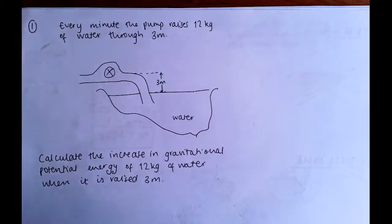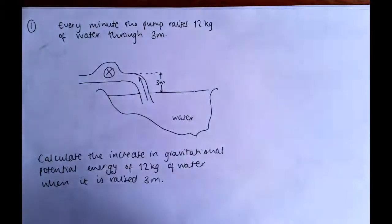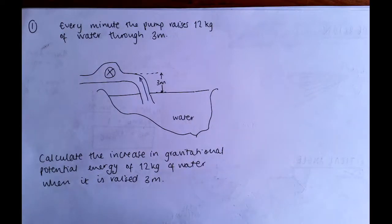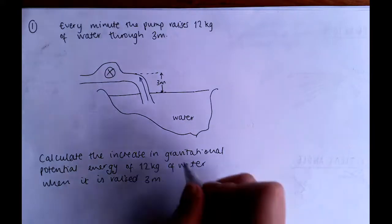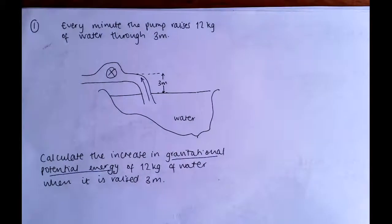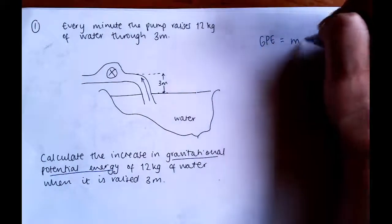I've redrawn the questions out to simplify them so that it's easier to look at them and we're just going to go through them. Question one was really straightforward. It was just a simple scenario: water is being raised up three metres, and you're told that 12 kilograms of water is raised every minute, and you're asked to find the increase in gravitational potential energy. So all we do is write the equation for it: GPE equals MGH.